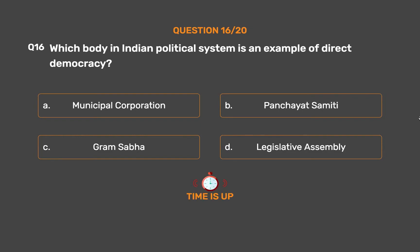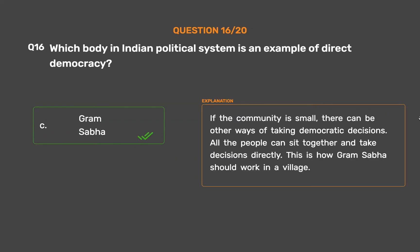The correct answer is Option C: Gram Sabha. If the community is small, there can be other ways of taking democratic decisions. All the people can sit together and take decisions directly. This is how Gram Sabha should work in a village.